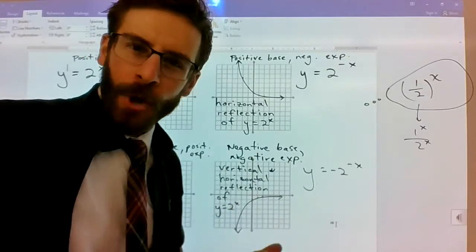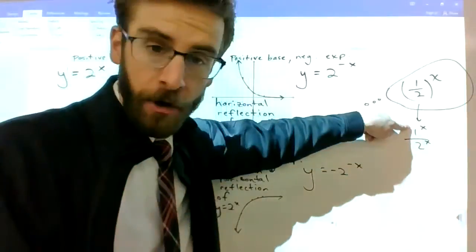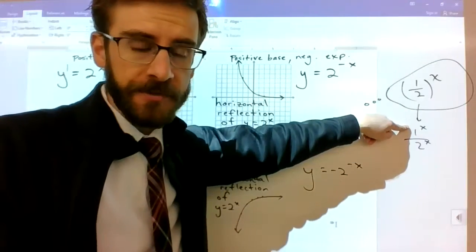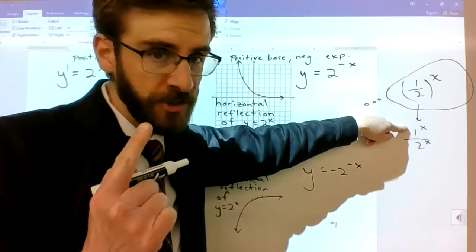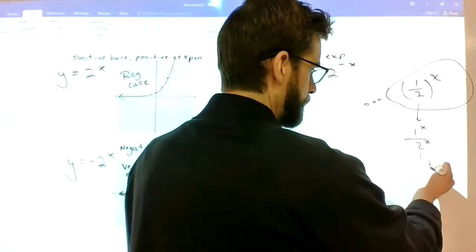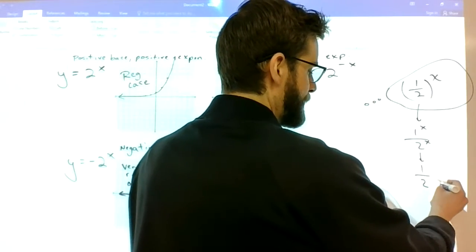So this is like one to the x power over two to the x power. That's fine. You can do that. And then what's one times itself any number of times? It's just one.